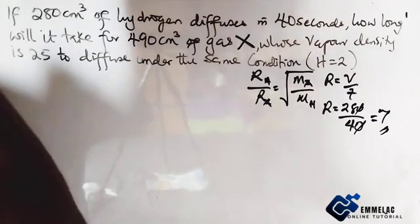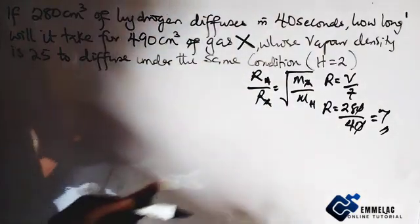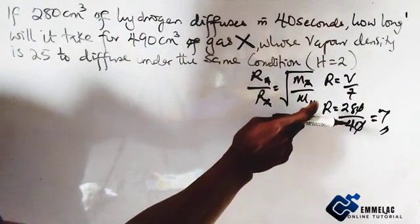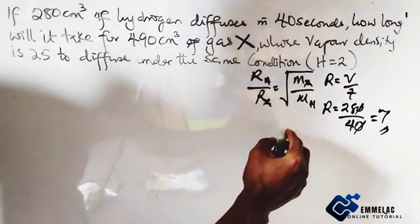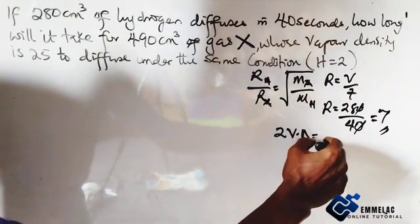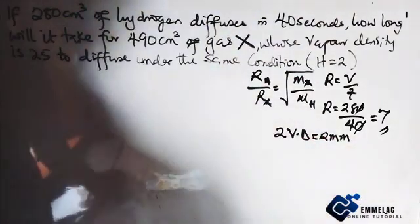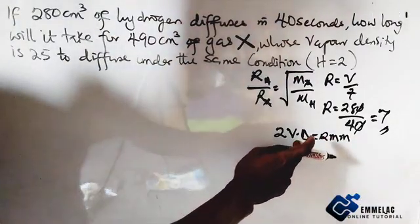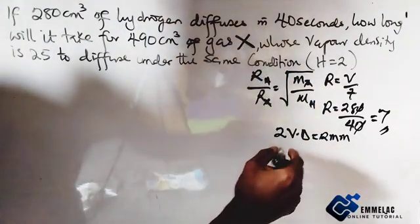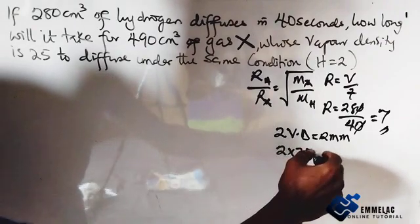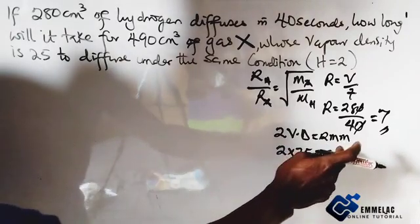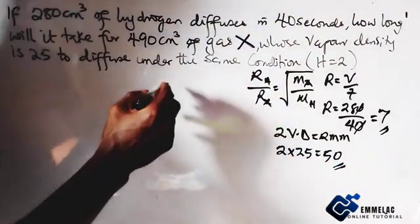Now let us find the rate for which X diffuses. The mass of hydrogen is 2 but we don't know the mass of X. But we know that 2 times vapor density equals to the relative molecular mass and we are giving the vapor density of gas X to be 25. So here we have 2 times 25 which gives us 50.